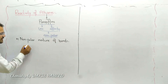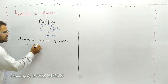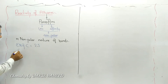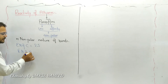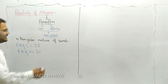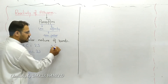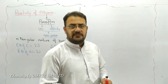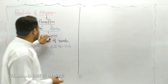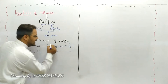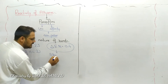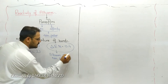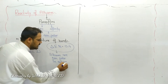Carbon has an electronegativity of 2.5 and hydrogen has an electronegativity of 2.1. When we calculate the electronegativity difference, it comes to almost 0.4, which is very low. Due to this low electronegativity difference, we consider alkanes as non-polar in nature.